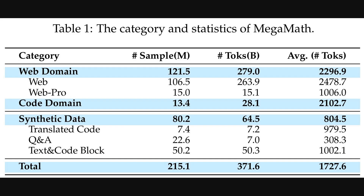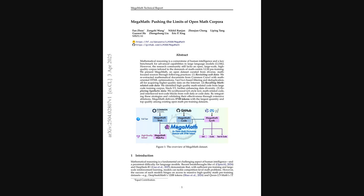Those ablation studies helped justify the pipeline choices. Table one gives us the actual numbers — the stats for the final MegaMath dataset. It breaks down the categories: the web domain, the code domain, and the synthetic data. The web part is the biggest chunk with 279 billion tokens, including that high-quality Web Pro subset. Then there's 28 billion tokens from the code domain, and 64.5 billion from the synthetic data, which includes translated code, Q&A, and those text-code blocks. Altogether it confirms that massive total of 371.6 billion tokens.